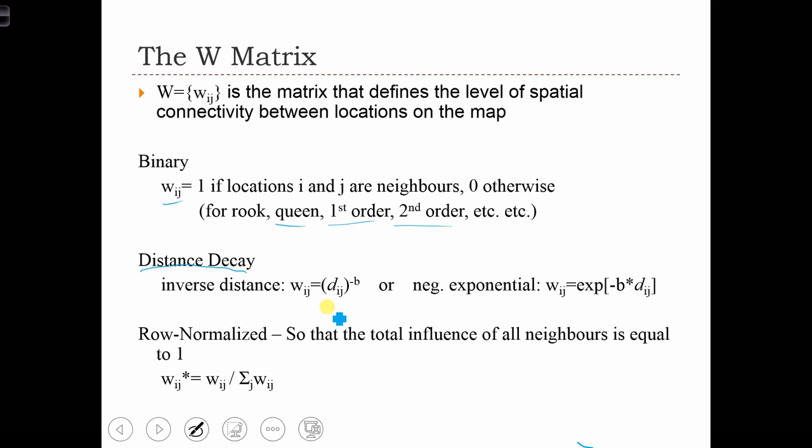So in this case, WIJ, so the weight between I and J, is equal to DIJ, the distance between I and J, all raised to negative B.